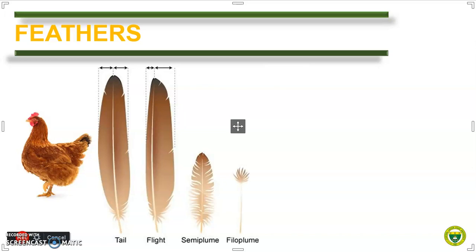The filoplume feathers are incredibly small. They have a tuft of barbs at the end of the shaft. They are attached to the nerve endings and send messages to the brain that give information about the placement of feathers for flight, insulation, and preening.